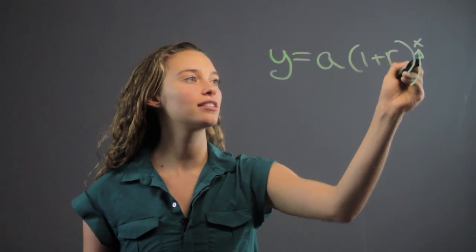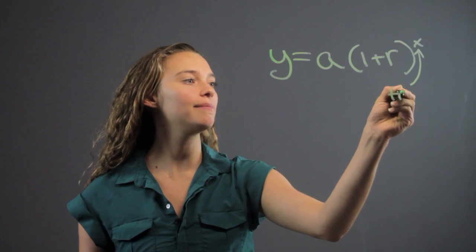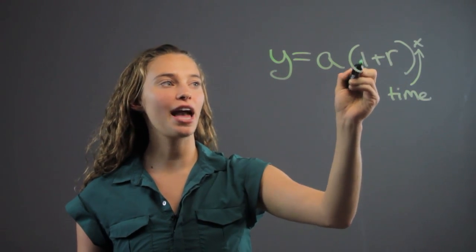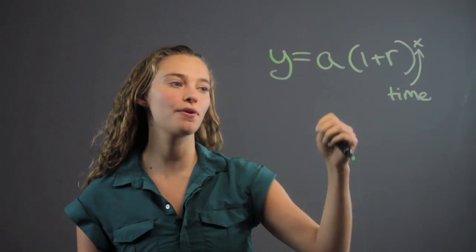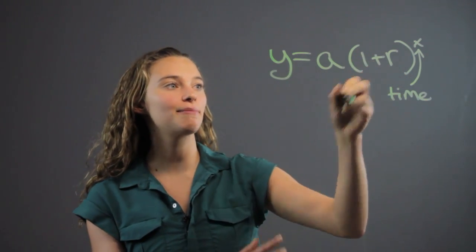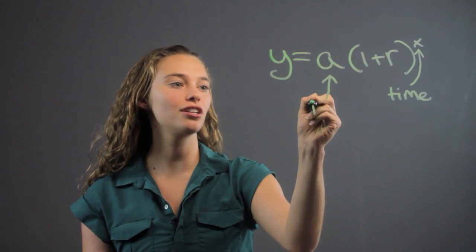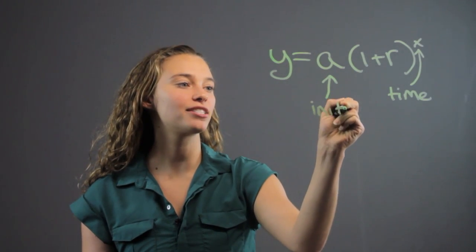Now, in this case, x is going to be the time. r is the rate. We add 1 so it's not a decimal or below 1. We add 1 to make it over 1. And then we have a is the initial amount that we're starting with.